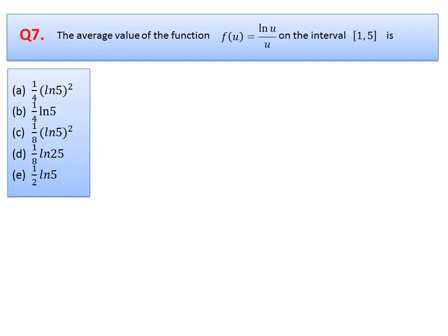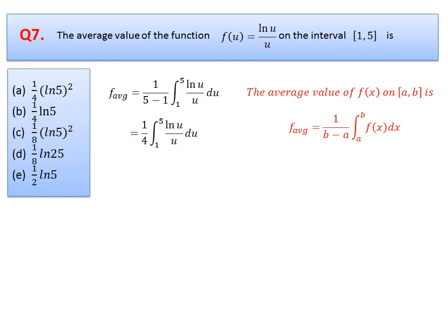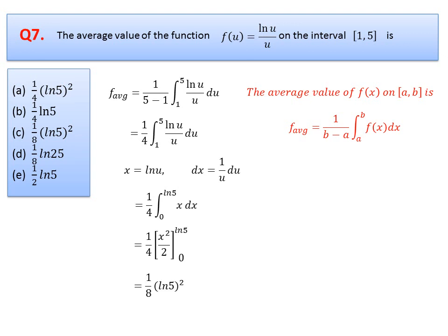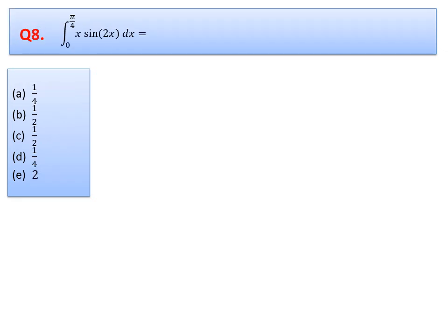Question 7: find the average value of the function on the given interval. Using the average value formula, the integral is set up and solved by substitution with x = ln u, so dx = (1/u) du. The lower limit becomes 0 and the upper limit becomes ln x for the new variable. Applying fundamental theorem of calculus gives the result. Option C is correct.